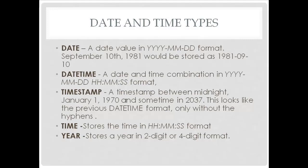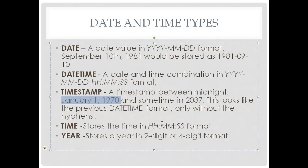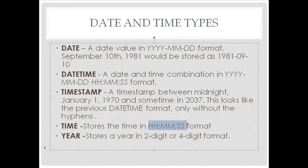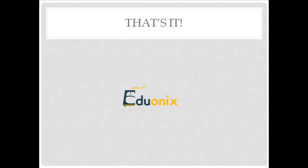A timestamp is basically a string of numbers representing time between January 1st, 1970 and sometime in 2037. It looks like the datetime format but without the hyphens — it's like a long string of numbers. Time is just the time with no date — hours, minutes, seconds. And year can store a year in two-digit or four-digit format.